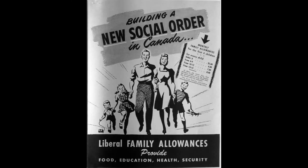Going into the election, the Liberals campaigned on a return to normalcy at home after the war in Europe ended. They ran with the slogan 'Build a New Social Order,' promising to spend more money on land, jobs, and business for returning veterans, build more housing, and establish a new industrial bank — all with the promise of reduced taxes.